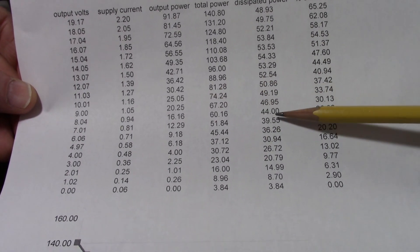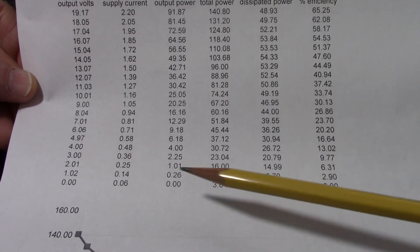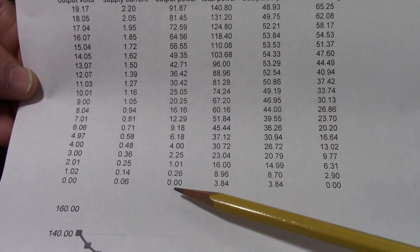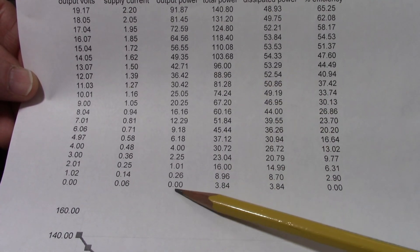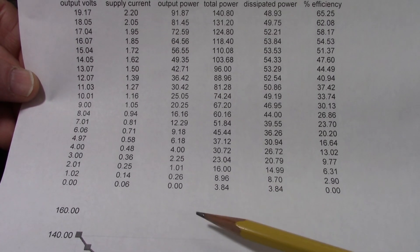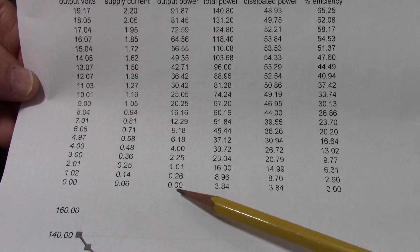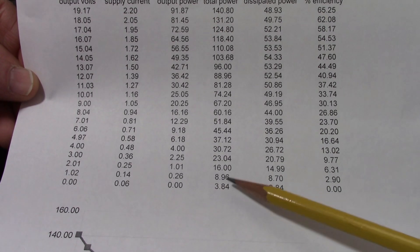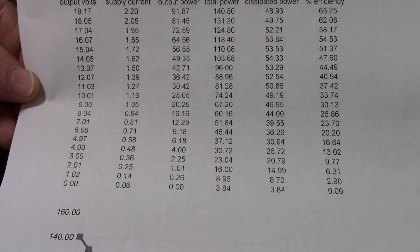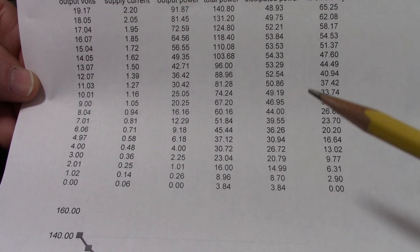So output power zero, efficiency zero of course because the amp's not putting any output signal yet it's still drawing power off the supply and that's due to biasing - there's bias currents flowing.